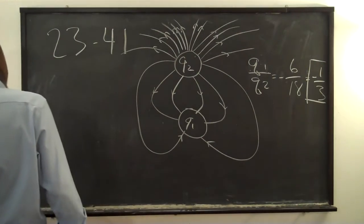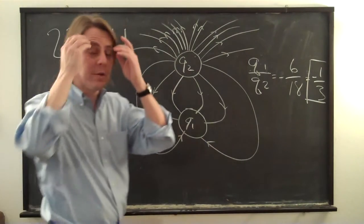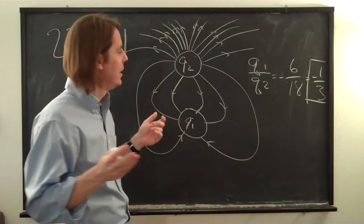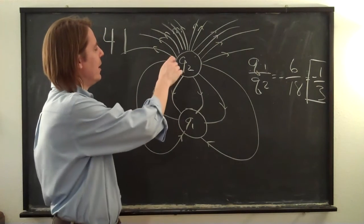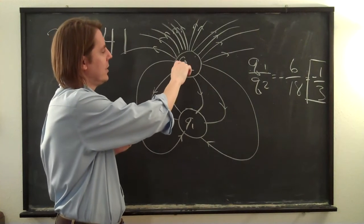And for part B, the question is, what are the signs of Q1 and Q2? So which one is positive and which one is negative? So you get that from the arrow. You look at that. Remember, those are the field lines. They go the same direction as the field vectors.